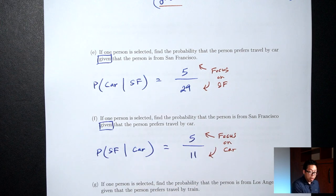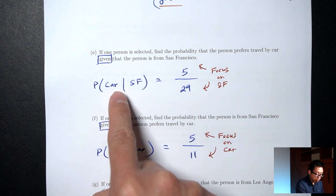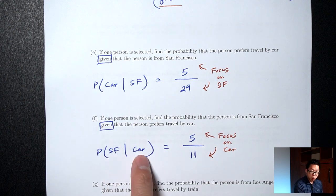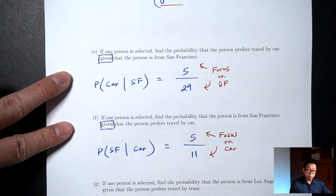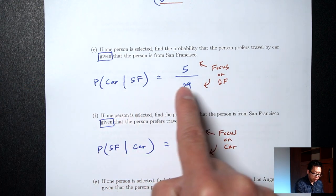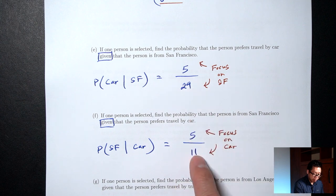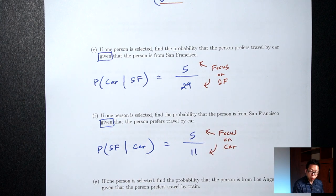Notice that parts E and F are asking two very similar things — E is car given SF, F is SF given car. The only difference is the order. So the order does matter: car given SF gives a different answer than SF given car. Be careful about the order.